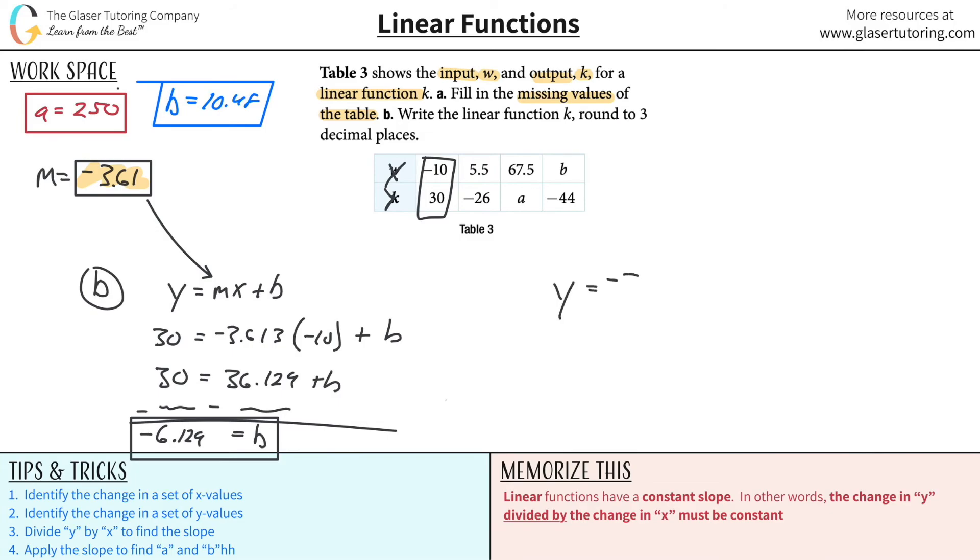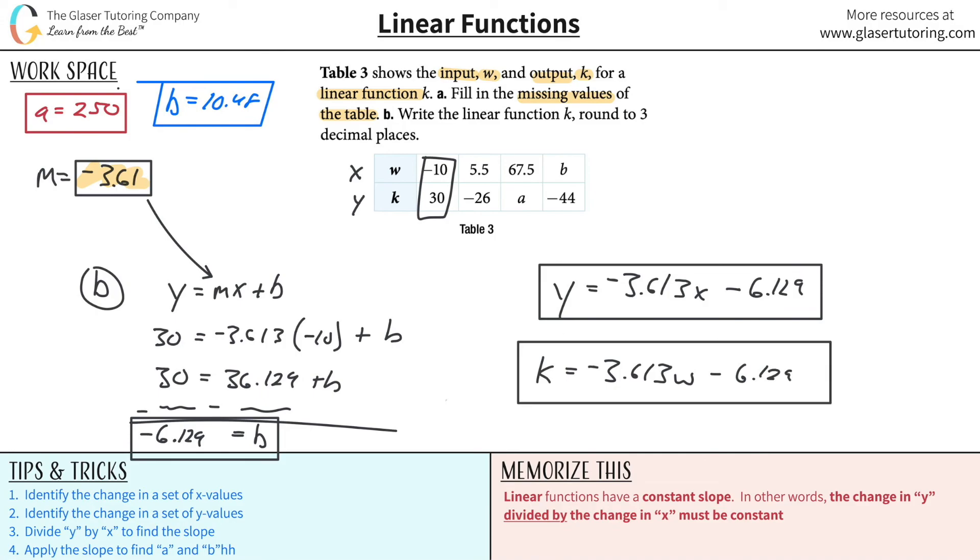Y will equal the slope value of negative 3.613x minus then 6.129. So that's basically what the answer should be. If it's off by a decimal point, I honestly wouldn't worry about it. It's just how you round throughout the problem. Just as long as you're in the ballpark. And now, this would be your answer here if we could leave it in terms of y and x. However though, don't forget that we defined y and x here to be w and k. This was y and this was my x. So now all you really have to do is just substitute out y and x in terms of w and k. So the y value is really k. Negative 3.613. The x value is really w. And then minus the 6.129. And that is that. So that would be the official answer.